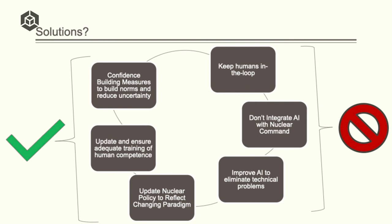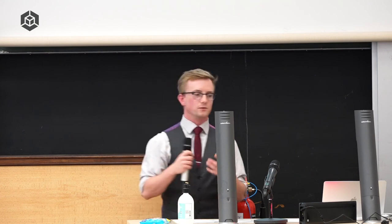Not integrating AI with nuclear command. Again, while it is good to argue for this potentially, I just find it incredibly unlikely that in the next 10, 15 years, that we're just not going to see more and more automation in these systems. So you might be fighting against the inevitable. And improving AI to eliminate technical problems, maybe it's a possibility. Some of these problems may be unsolvable. And at least in the next 10 years, given how long defense procurement takes, today's problems are going to matter. And so we kind of have to work around these.